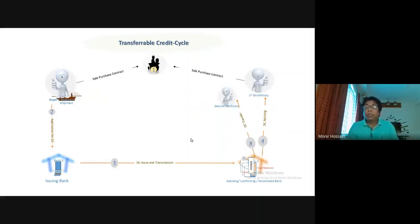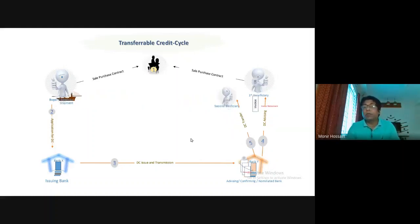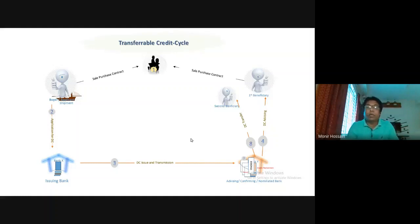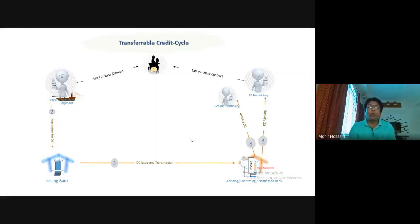The first beneficiary then replaces a document — that is, the invoice. One document is coming from the first beneficiary; it replaces its invoice with that document for a higher value. This is because the transferred credit carried a lesser value, and the documents are with a lesser value, but the first beneficiary replaces the invoice to cover the full value of the first letter of credit.